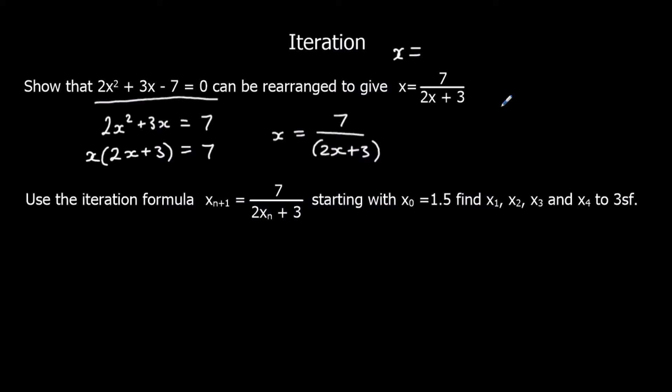So we've rearranged the equation into the form x equals. And now to change it into an iteration formula, we add a little n plus 1 on the side where x is by itself. And we add an n, so 2x n, to any x's on the other side. So in this case, there's only one x, so we change that to x n. And there we have, we've set up an iteration formula.